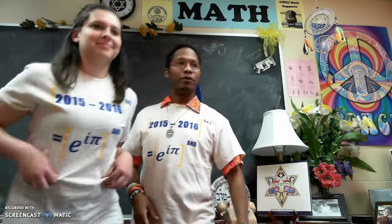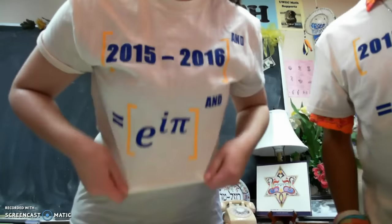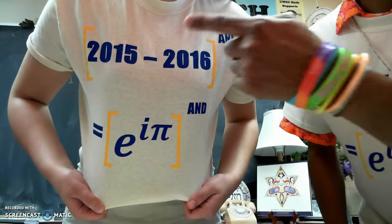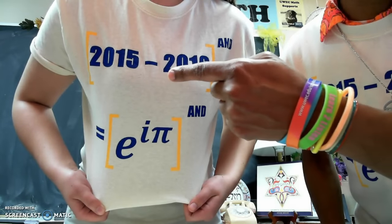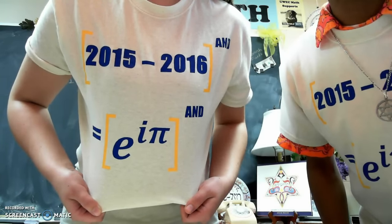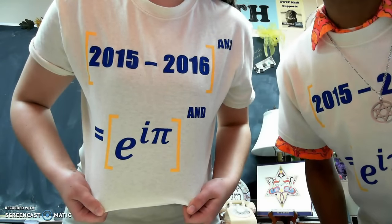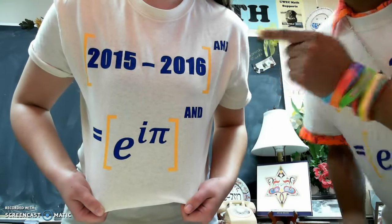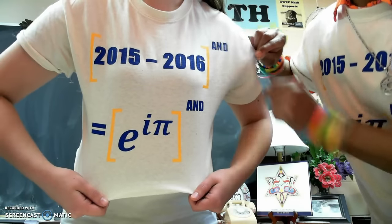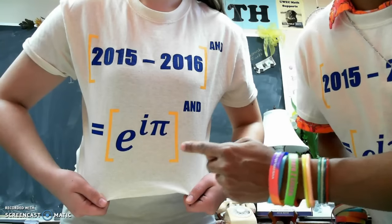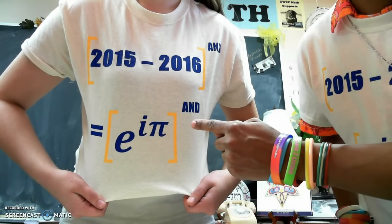So let's show them the shirt up close. Sarah's here modeling the shirt. We have this, that looks like a hyphen, but that's not a hyphen, that's a minus sign. Do you know what 2015 minus 2016 equals? You got it, minus 1. And so we have negative 1 here to the power of AND. And that equals e to the i pi to the power of AND.